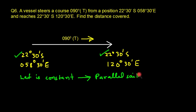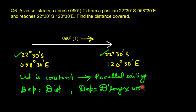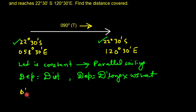For parallel sailing, the formula is: Departure = Distance, and also Departure = D.Long × cos(Latitude). We need to work out the value of D.Long. The longitude goes from 058°30'E to 120°30'E.